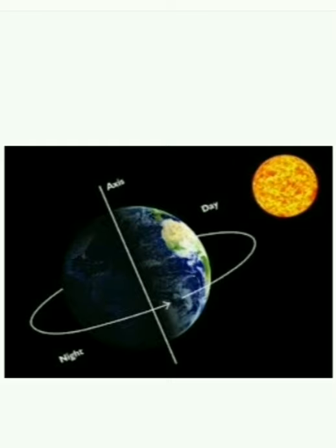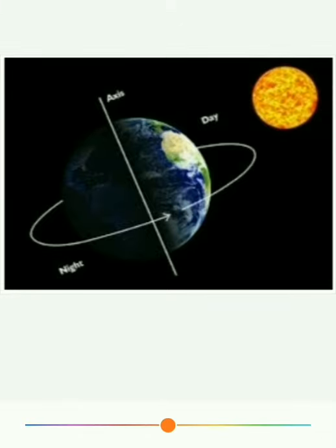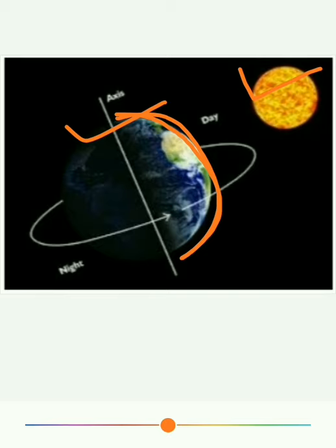Earth rotates from west to east side. How do day and night take place? Observe the picture carefully. In this picture, we saw Sun and Earth. During the Earth's rotation, one side of the Earth faces the Sun and receives sunlight from the Sun.